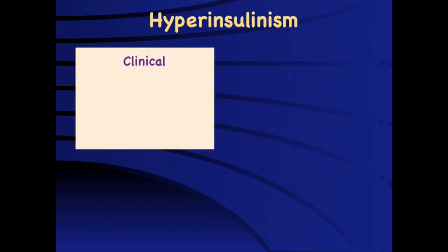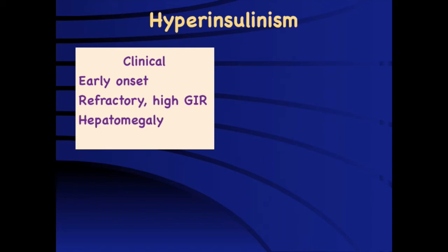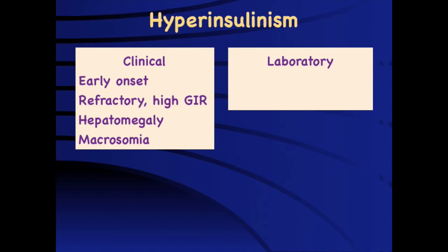Hyperinsulinism is a very important cause of hypoglycemia and should be suspected in children with early onset hypoglycemia who require very high glucose infusion rates and are refractory to treatment. They also tend to develop hepatomegaly because of glycogen storage — glycogen is present but cannot be used — and they will also have macrosomia. These individuals will typically be non-ketotic because the ketogenic pathway is blocked, which poses another problem: they don't have an alternate substrate for the brain. Therefore, for the same level of hypoglycemia, they will do much worse compared to a glycogen storage disease child who is producing ketones.